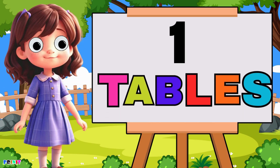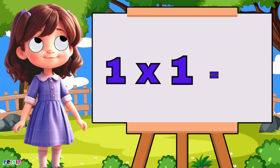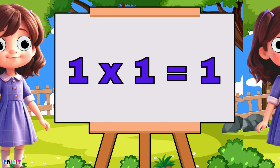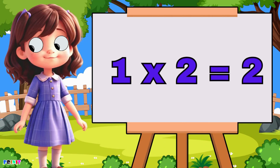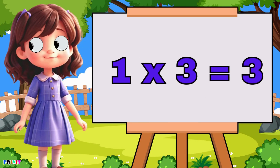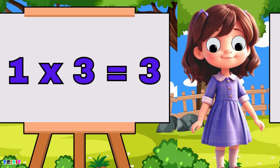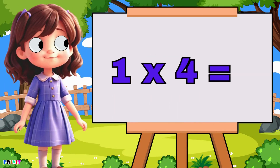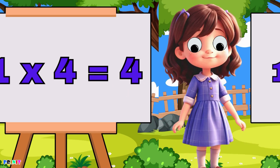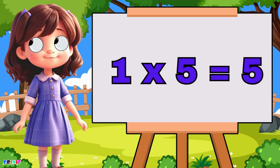One tables. One ones are one, one twos are two, one threes are three, one fours are four, one fives are five.